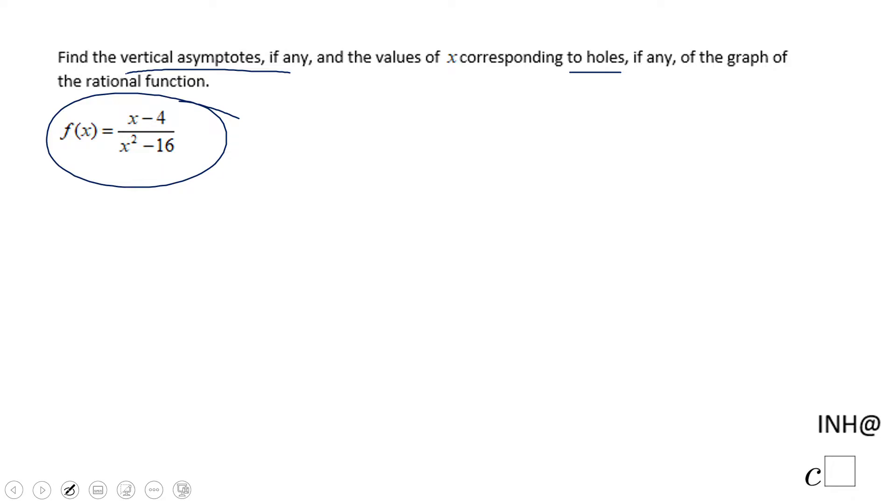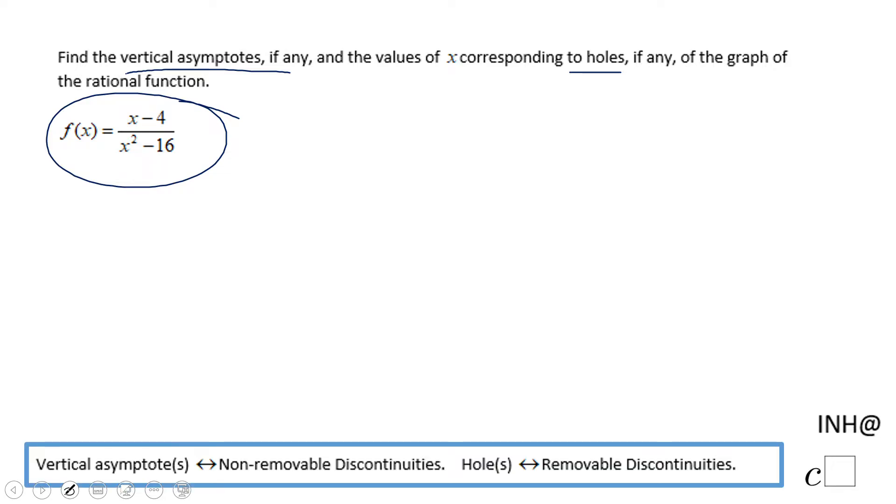For finding the vertical asymptotes or the hole, we need to look for the discontinuities. And for finding the discontinuity, we need to set the denominator equal to zero.